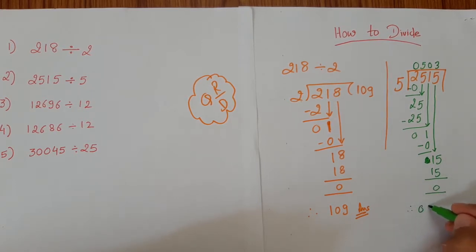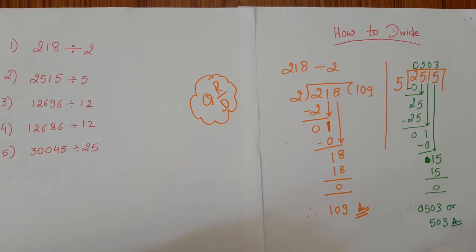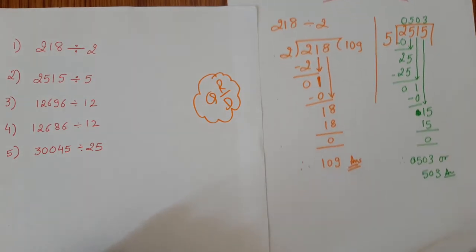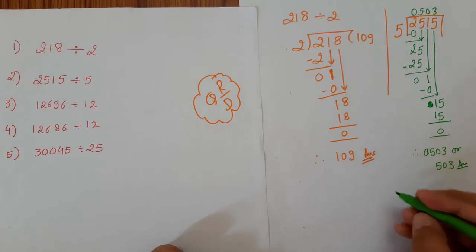So therefore the answer is 0503. We do not start any number by 0, so we can write it as 503. Hopefully you understood this method. Let's take down some more examples.